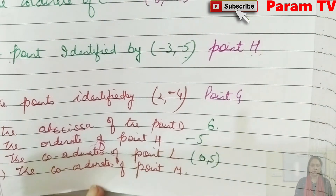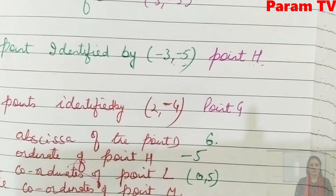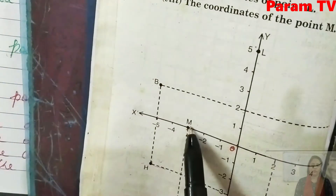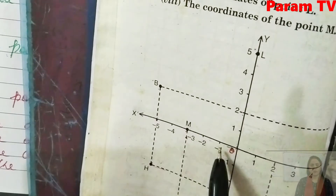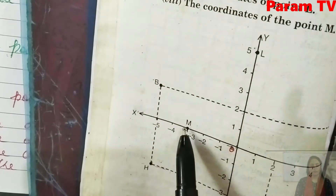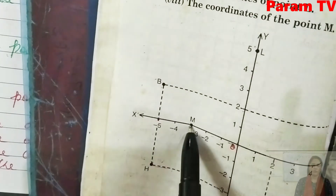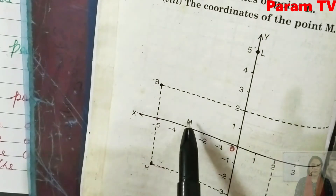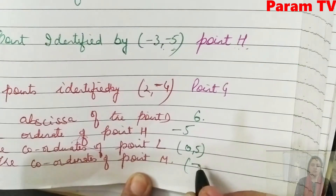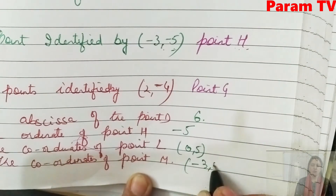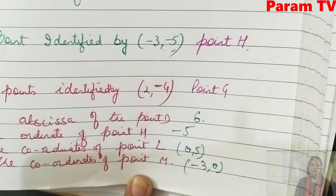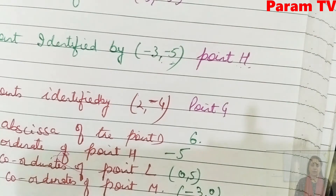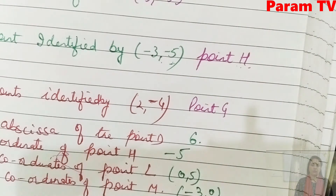Next: coordinates of point M. Look at point M — on the x-axis it is at minus 1, minus 2, minus 3, and towards y it hasn't moved, so y is 0. The coordinates of M are (minus 3, 0). This is all about this exercise.